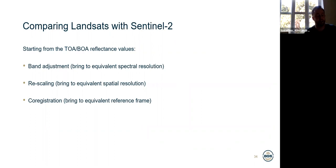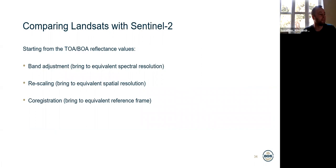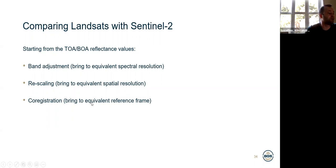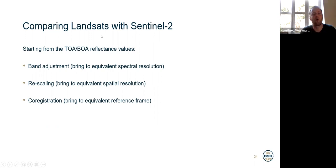Just to compare Landsat sensors with Sentinel-2: if we want to compare Sentinel-2, which started only in 2015, with Landsat, we have to consider different resolutions. We have to do band adjustment because they may have slightly different spectral resolution, rescaling because they have a different spatial resolution, and co-registration because they have to be brought to the same reference frame. For our exercises we will just compare Sentinel-2 data with Sentinel-2 data, so we don't need to care about this processing — but this is something we must account for when comparing different sensors.